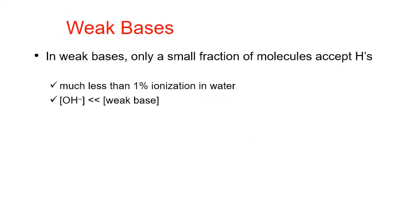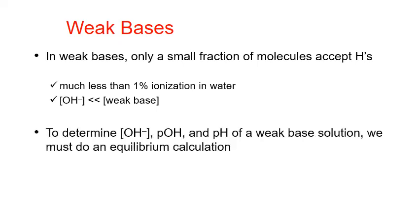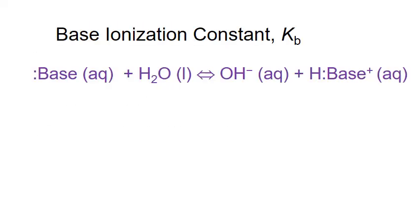Now let's look at the process for weak bases. In weak bases, only a small fraction of molecules accept hydrogen atoms from water to produce hydroxide ion in solution — for most weak bases, this is less than 1% of the molecules. This means that the actual concentration of hydroxide ion at equilibrium will be much less than the original concentration of the base. To determine that hydroxide ion concentration and the pOH and pH that depend on it, we have to do an equilibrium calculation using a base ionization constant, or Kb.